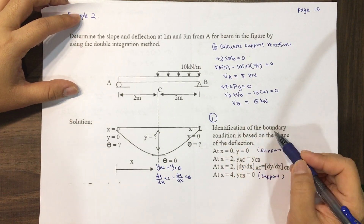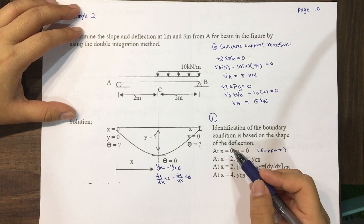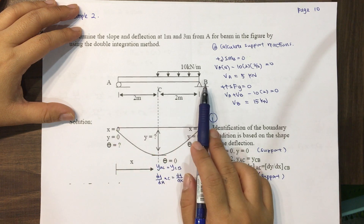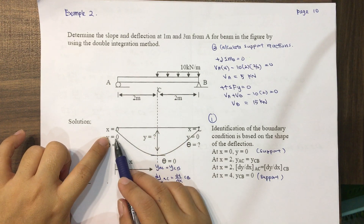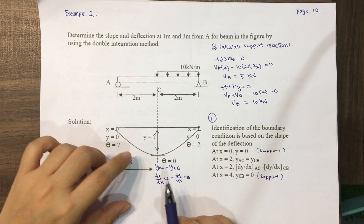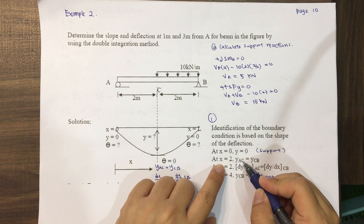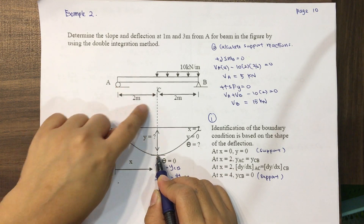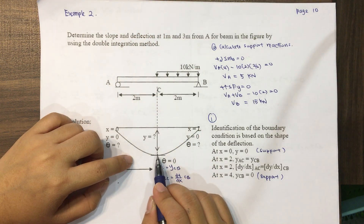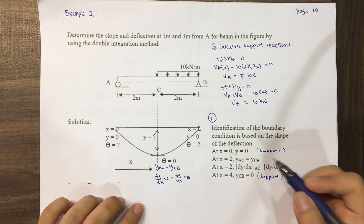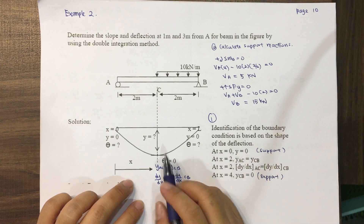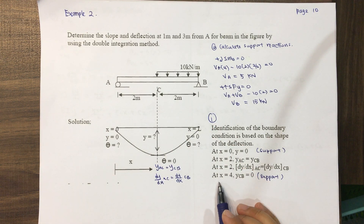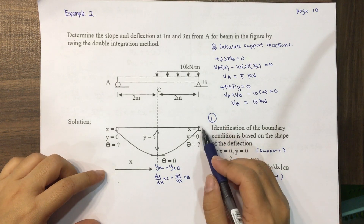First, we identify the boundary conditions based on the shape of the deflections. At support A, X equals 0 and Y equals 0, but theta is unknown because at a roller or pin support, the slope has a value while the deflection Y is zero. At X equals 2, the slope and Y from equation Y_AC equal those from Y_CB — the same value, but not zero. At X equals 4, Y_CB equals 0 at the pin support.